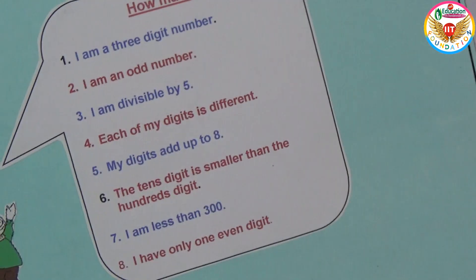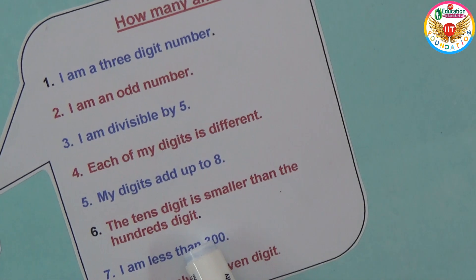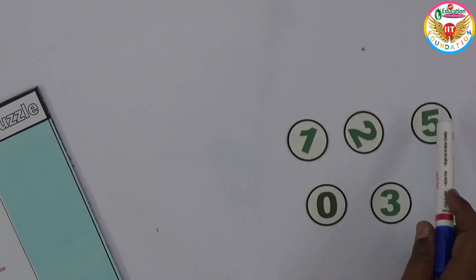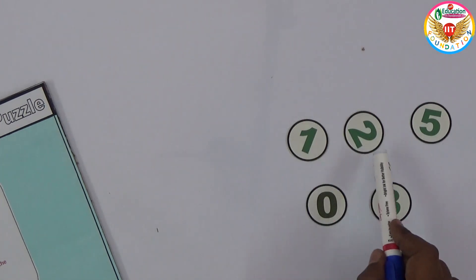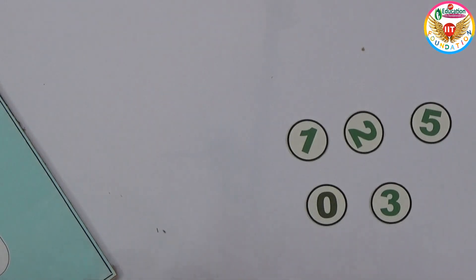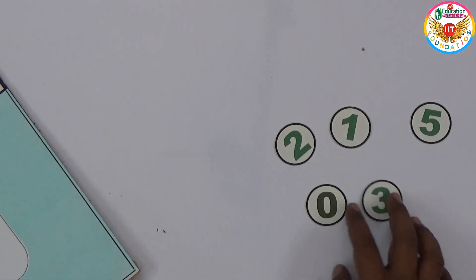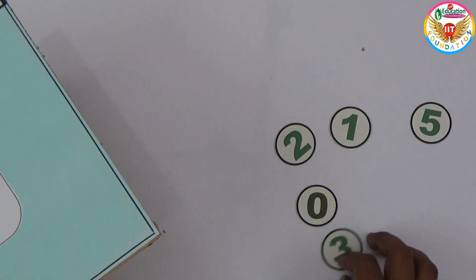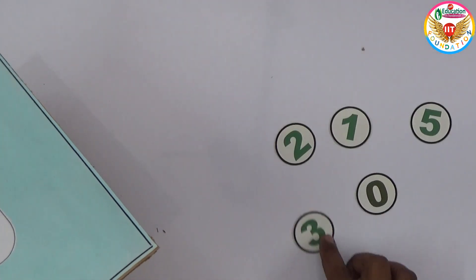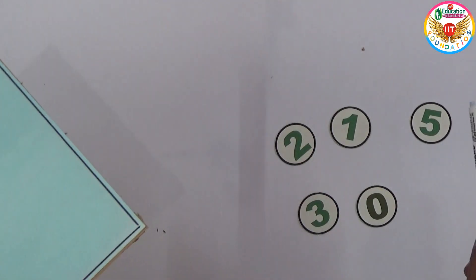The next clue says the tens digit is smaller than the hundreds digit. Applying this to our cases: for the pair 2 and 1, tens must be smaller, so it becomes 215. For the pair 3 and 0, tens must be smaller, so it becomes 305.